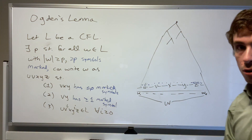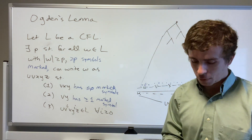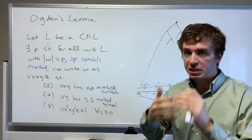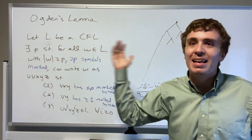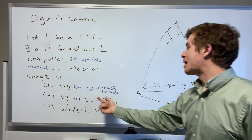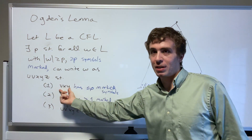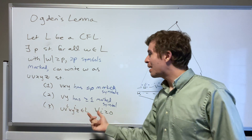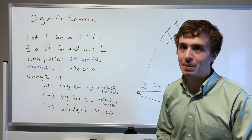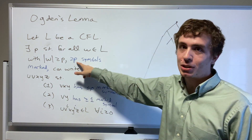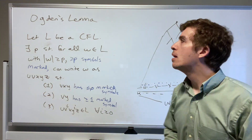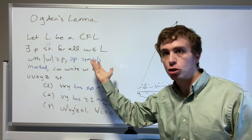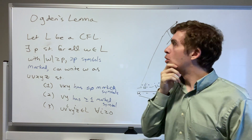Why does this generalize the normal pumping lemma? In the normal pumping lemma you just mark every symbol. If you have every symbol marked, then the vxy part has at most p characters — that's the usual pumping lemma — and vxy has length at least one. So if we mark everything we recover the original pumping lemma, but if we choose not to mark certain things, we get something stronger by using Ogden's Lemma.